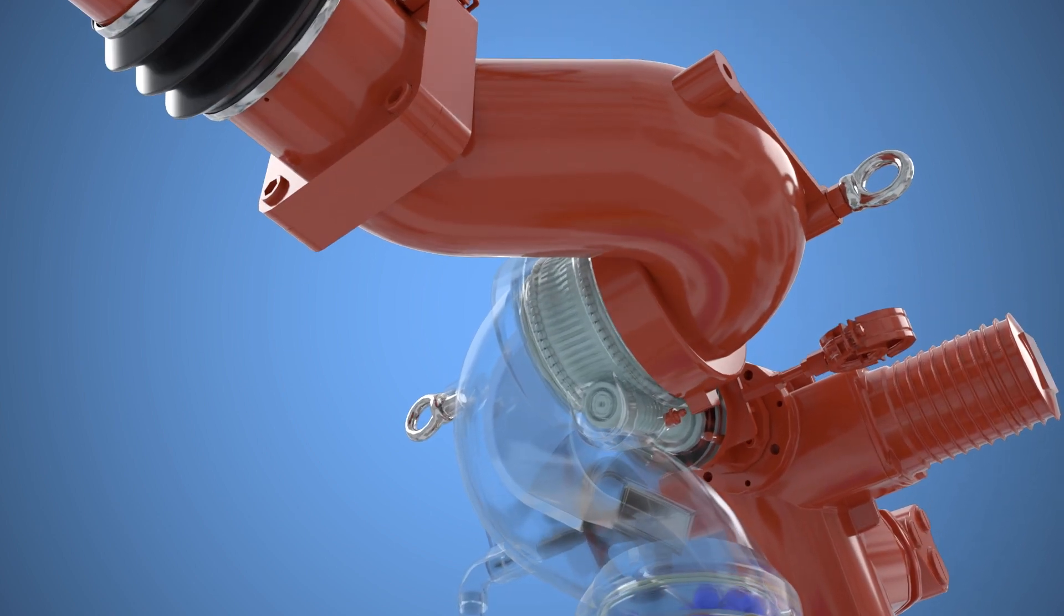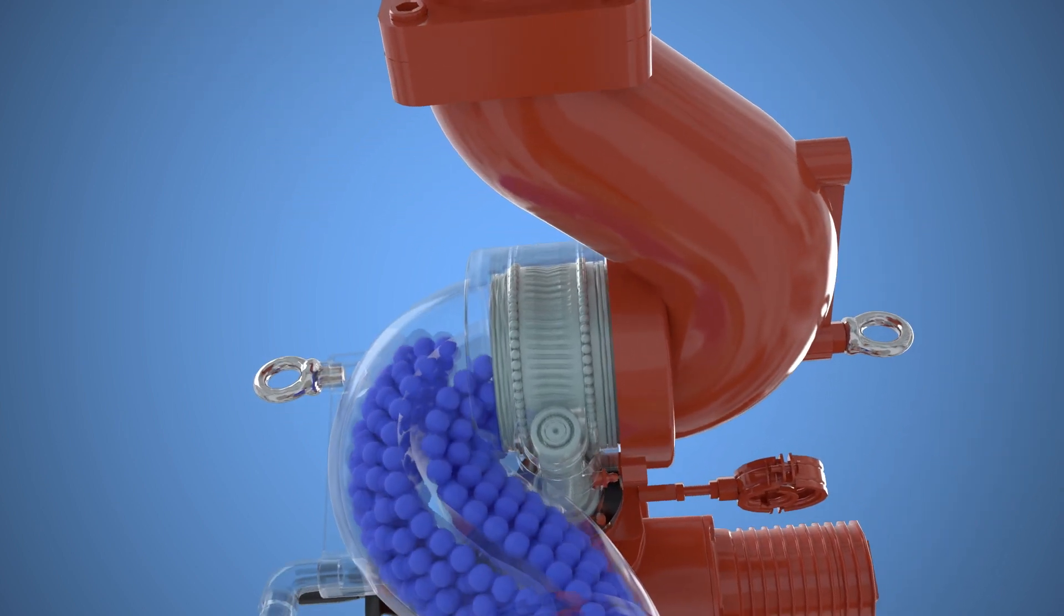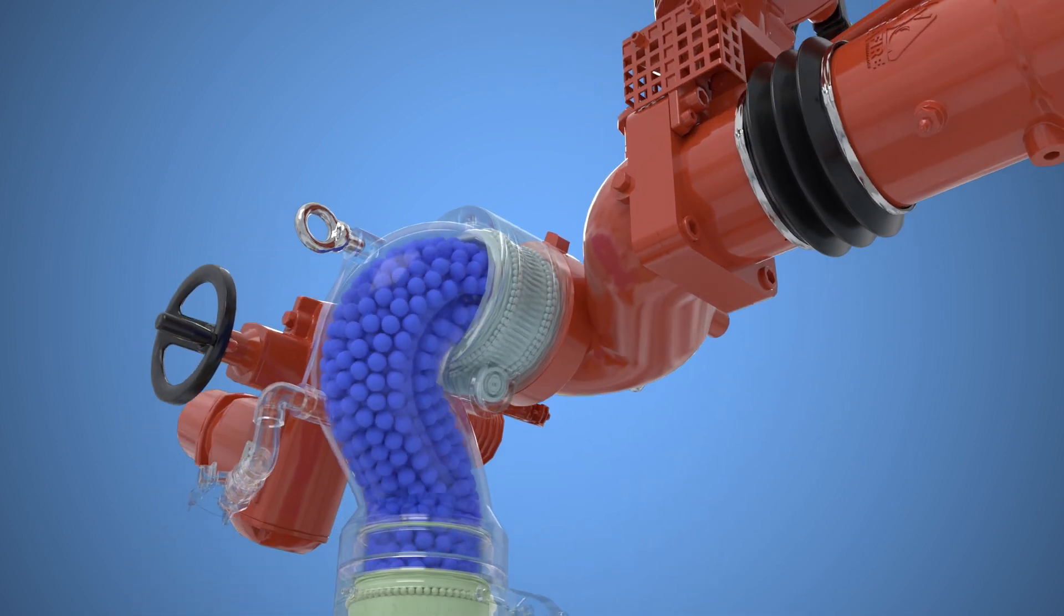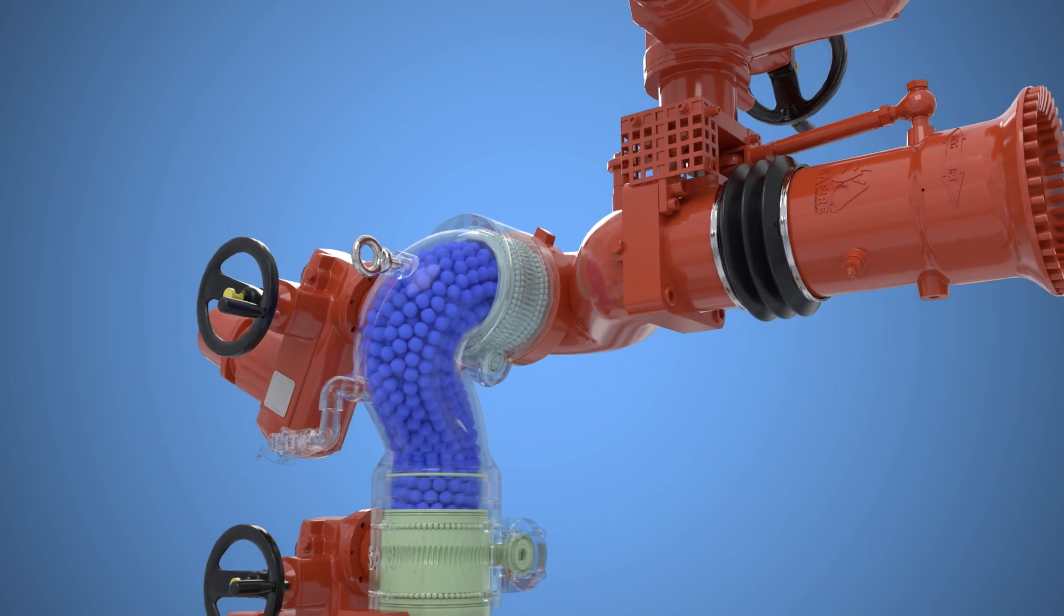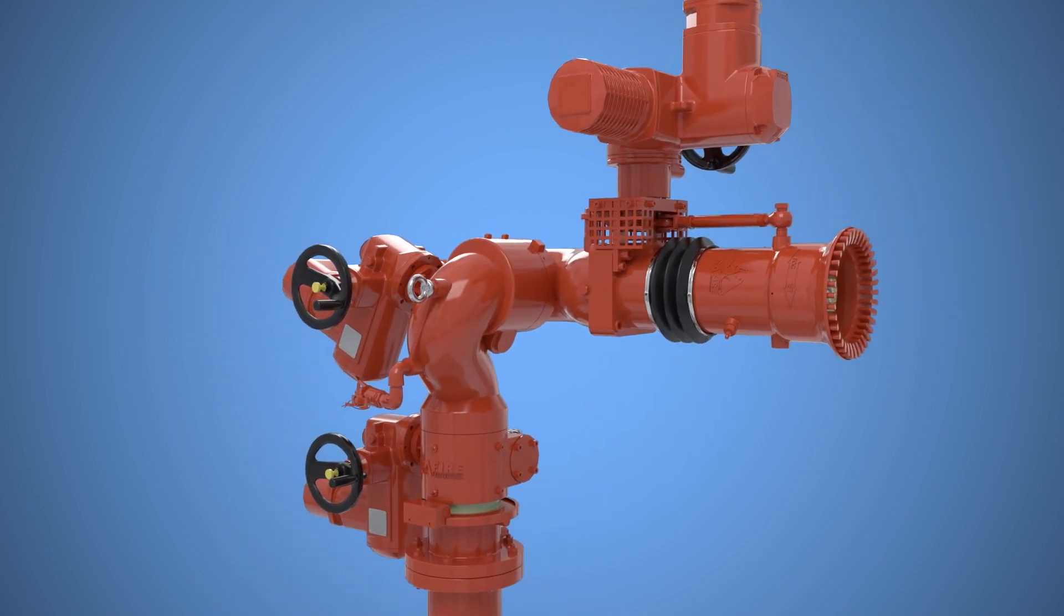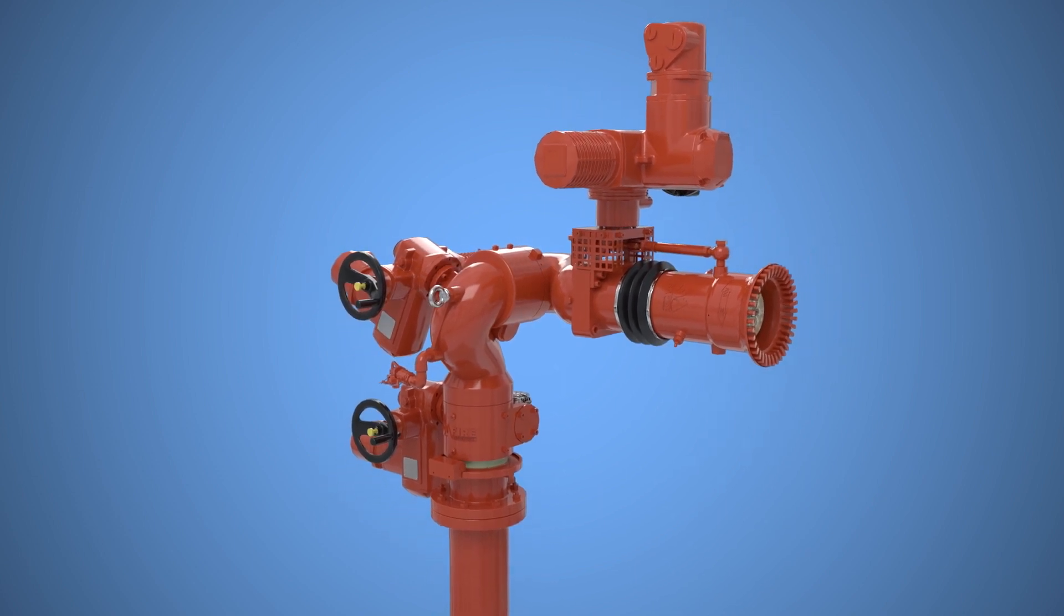The flow of water enters the monitor body from the base flange and is distributed within the body of the monitor to the outlet nozzle. Reaction forces are minimized by the internal absorbers in the monitor body cast which uniformly distribute the water in the internal waterways.